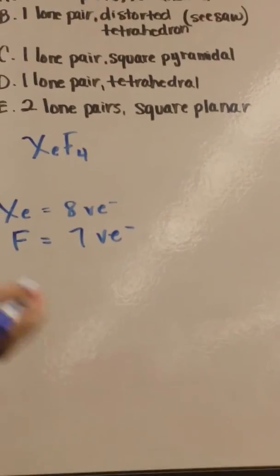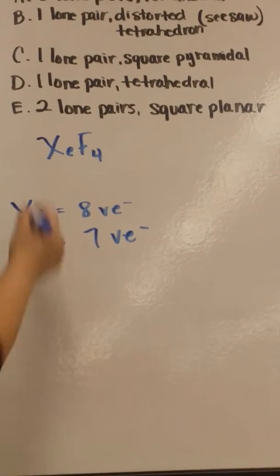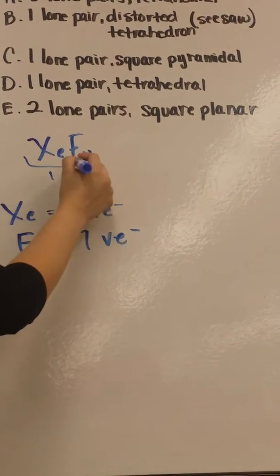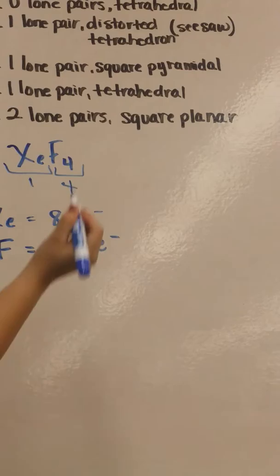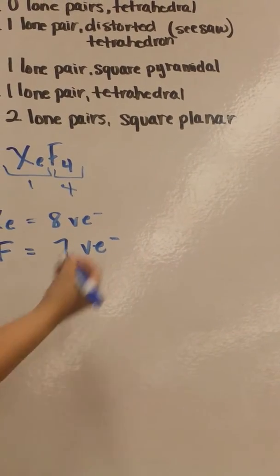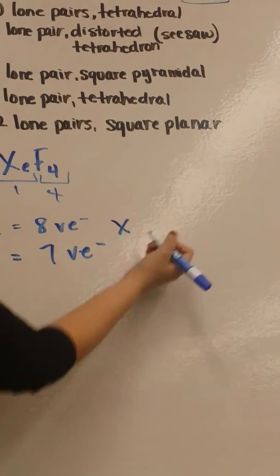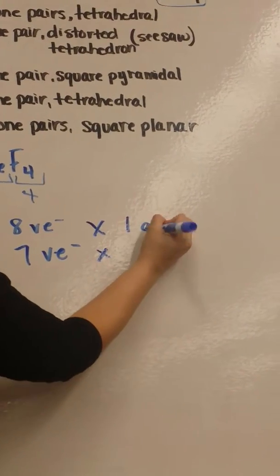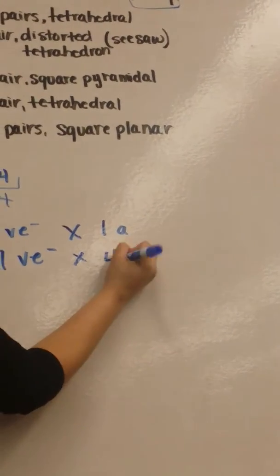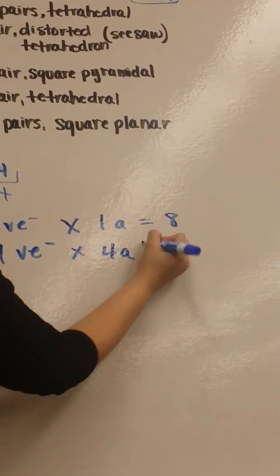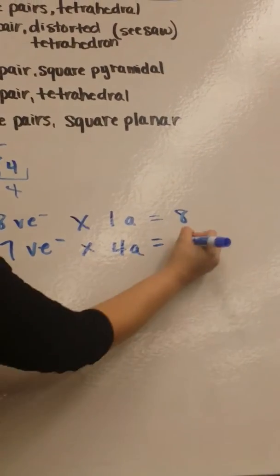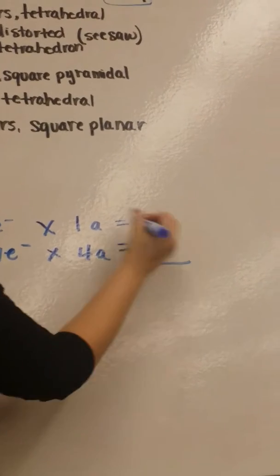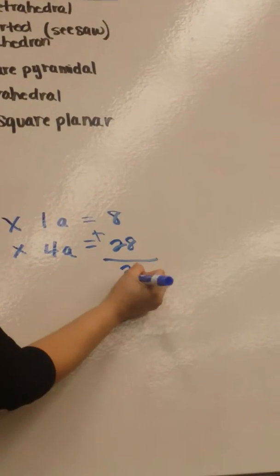Now if we see the number of atoms that we have of each, we can see that we only have 1 of xenon and 4 of fluorine. We're going to multiply it by the amount of atoms we have. So 1 times 8 is 8, and 4 times 7 is 28. So the total valence electrons will be 36.